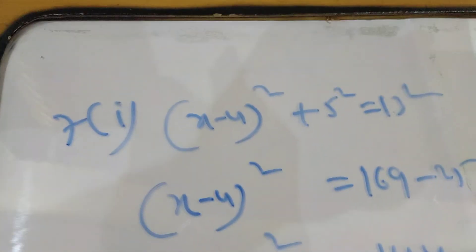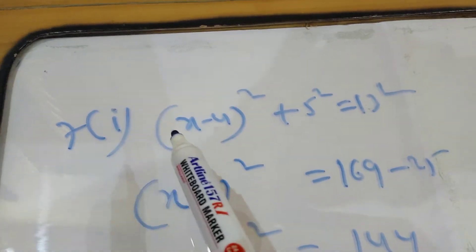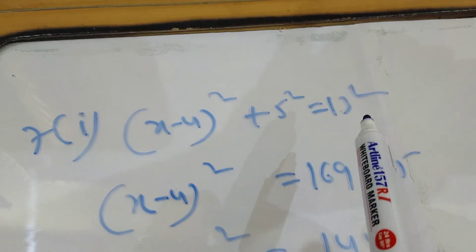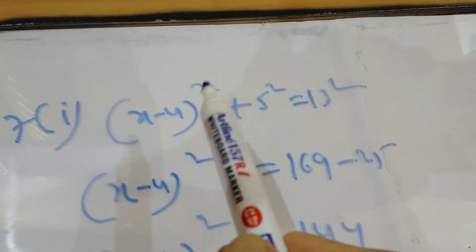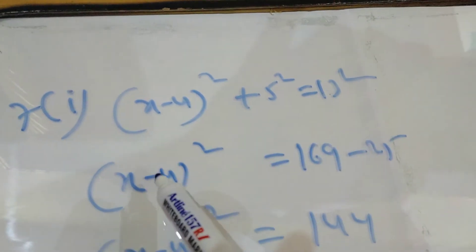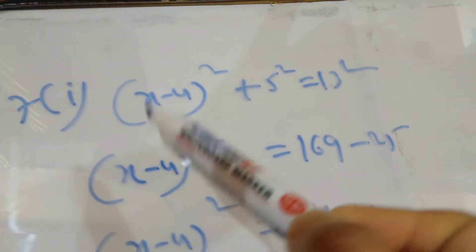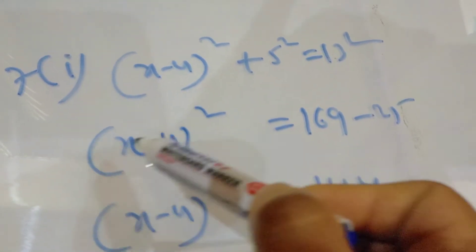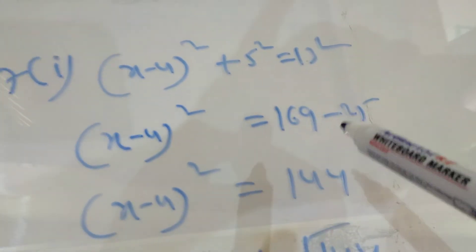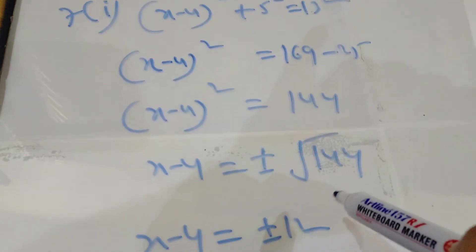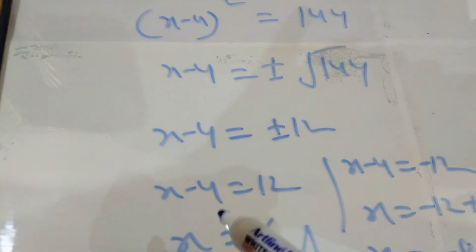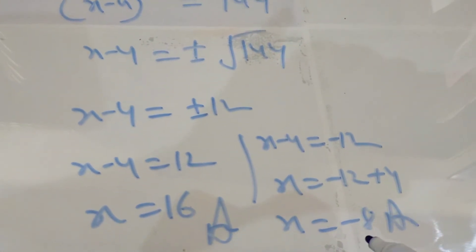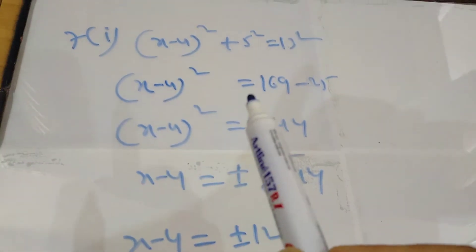Now I want to discuss an important question — question 7, first part: (x − 4)² + 5² = 13². In this question I can apply the (a − b)² formula, simplify to quadratic form, and then solve. But there is another method: keep (x − 4)² as is and shift 5² to the right side, giving (x − 4)² = 144. Then x − 4 = ±√144 = ±12, so x − 4 = 12 gives x = 16, and x − 4 = −12 gives x = −8.